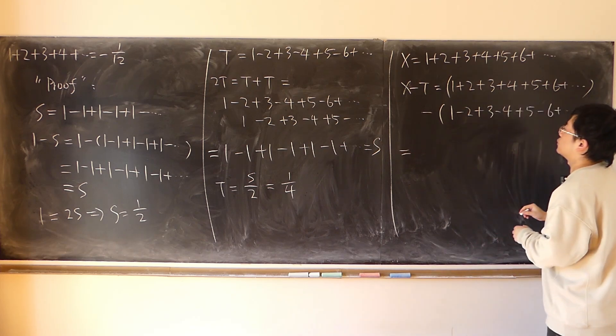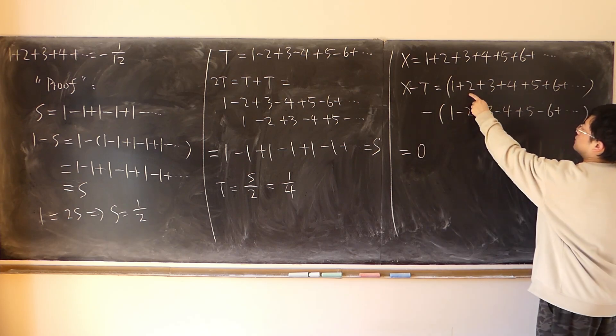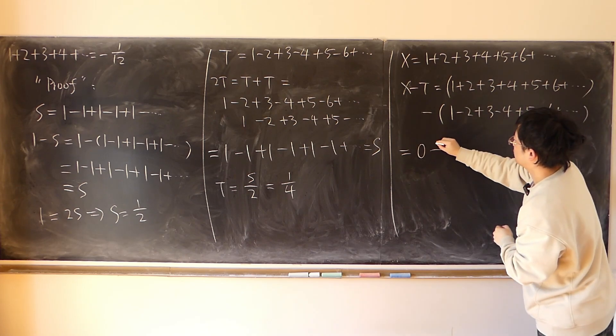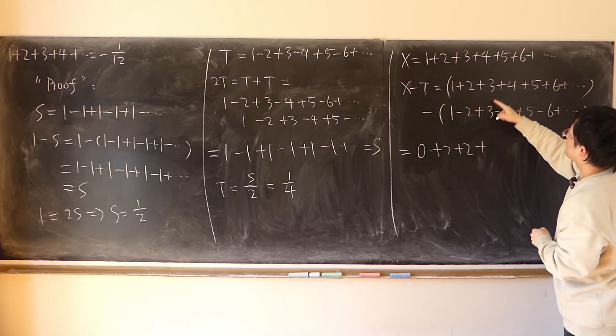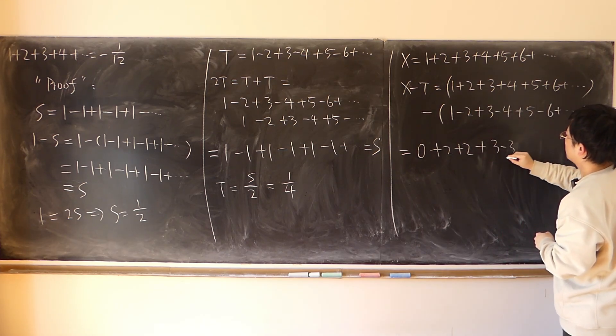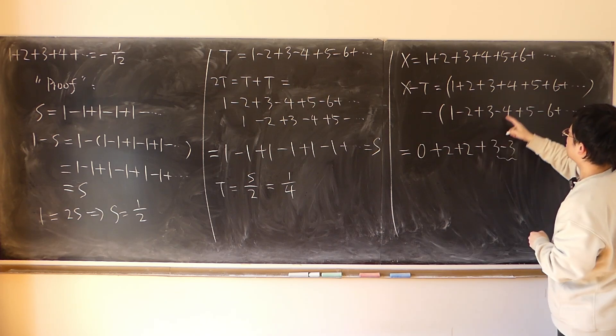And that is equal to, so the first term minus first term, so 0. Second term, minus minus plus, so 2 plus 2. 3 minus 3. Again, 0.